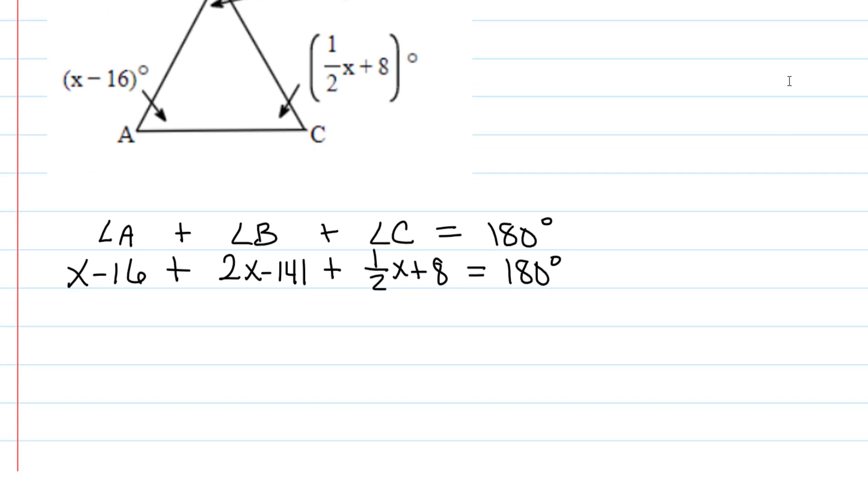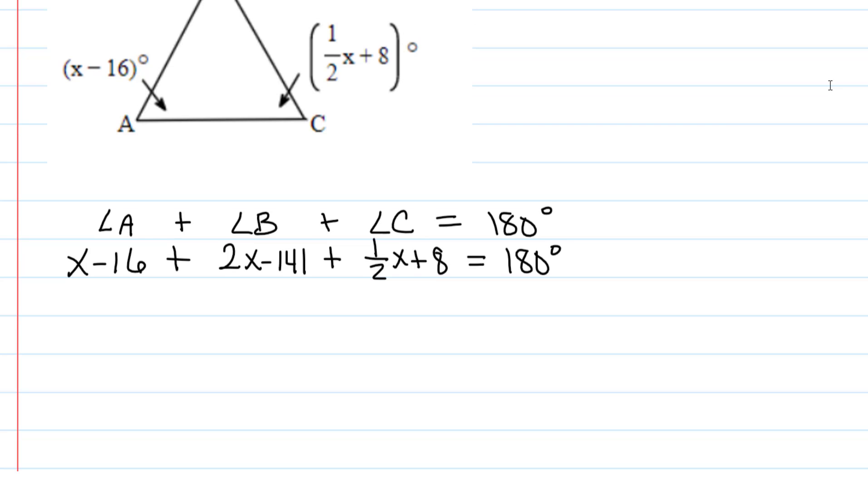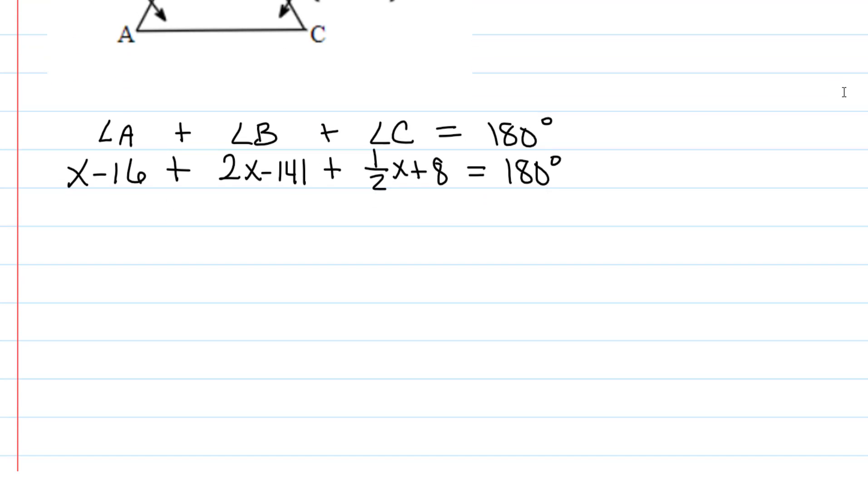Now the next step is usually to combine like terms. That just means put the terms with x's together and the constant terms together. By the way, terms are just things that are separated by a plus or minus. So each of these underlined expressions is a term. So we're going to put together the terms that have x's in them, and the terms that don't have x's with them are separate because they're not like terms.